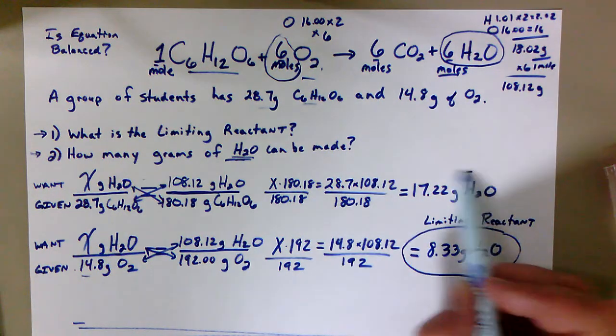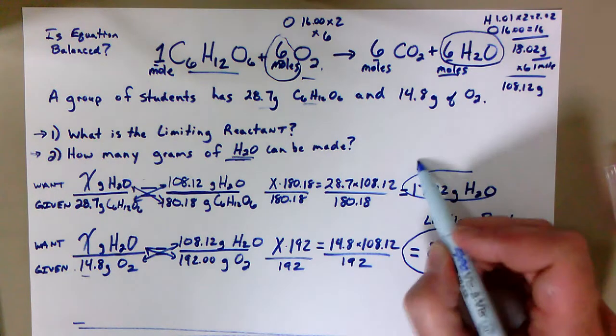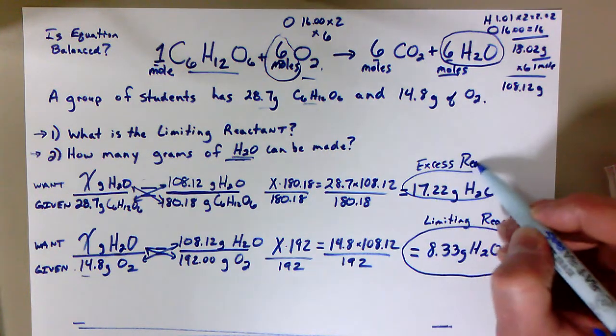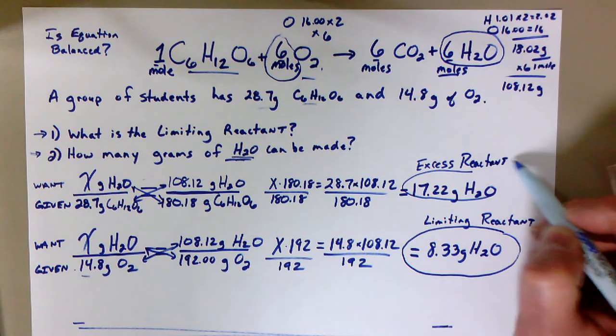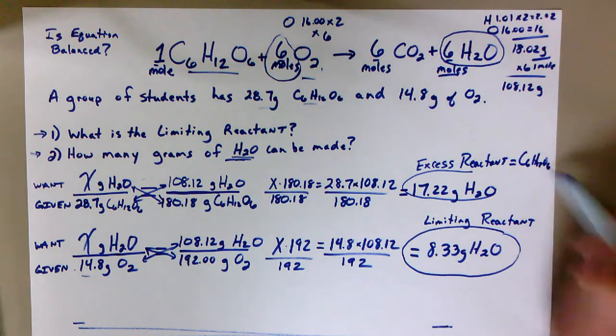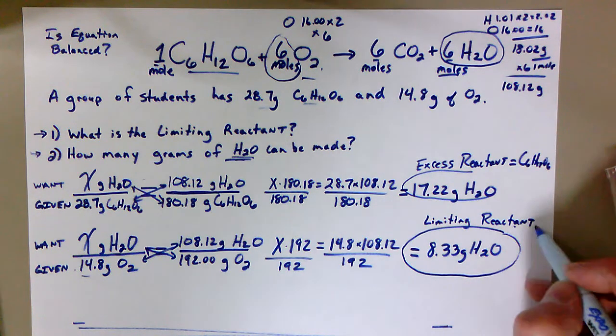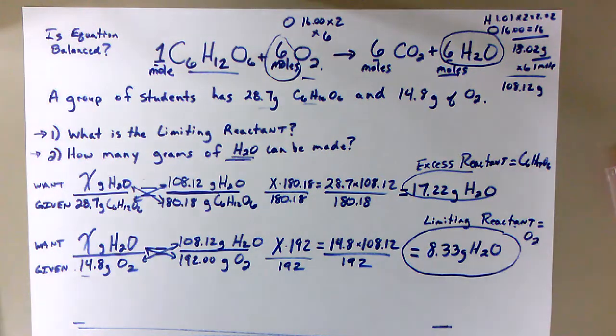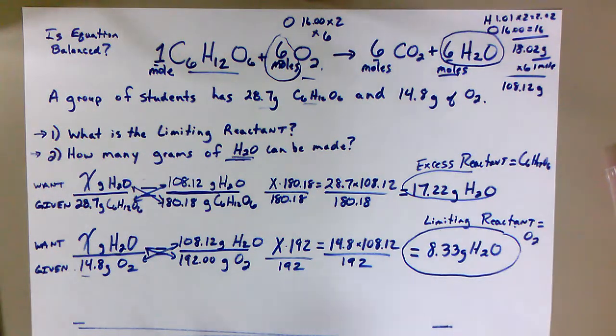Which means we have extra, we have excess of the C6H12O6. The limiting reactant is the O2 because it is only enough to make 8.33 grams of H2O. So what would be our answer for question number two? It would be this 8.33 grams of H2O.